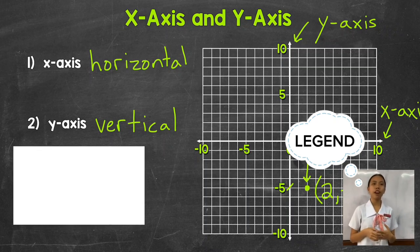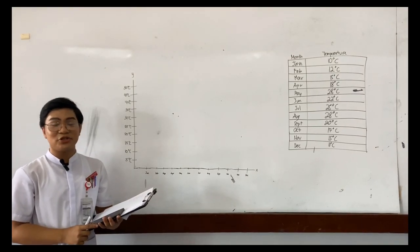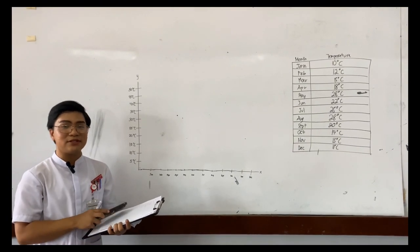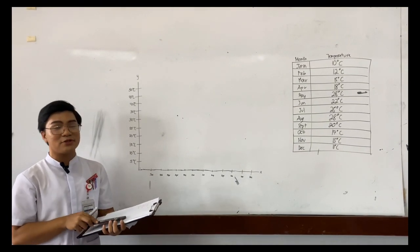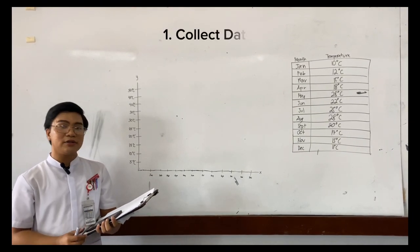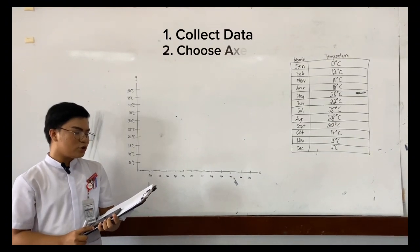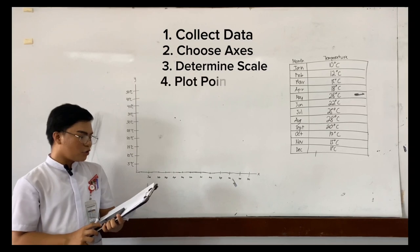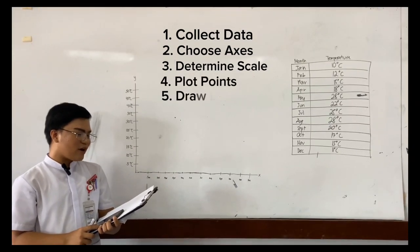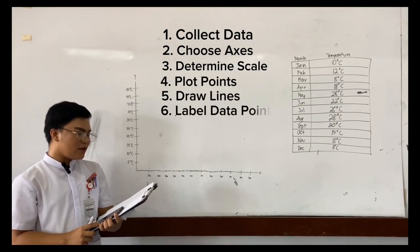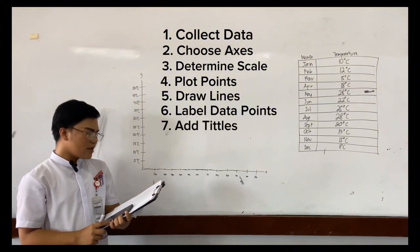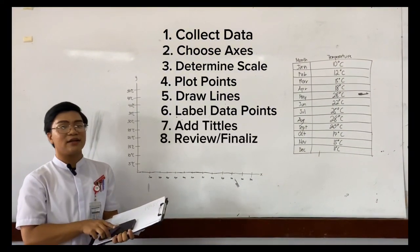Understanding these terms equips you with the tools to read and analyze line graphs effectively. Now I will discuss the steps and procedure on how to make a broken line graph. The steps are: number one, collect the data; number two, choose axes; number three, determine the scale; number four, plot points; number five, draw lines; number six, label data points; number seven, add titles; and number eight, review and finalize.